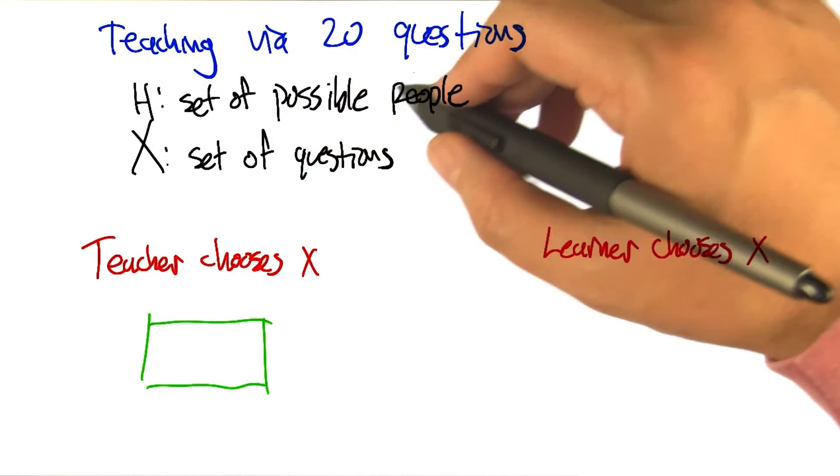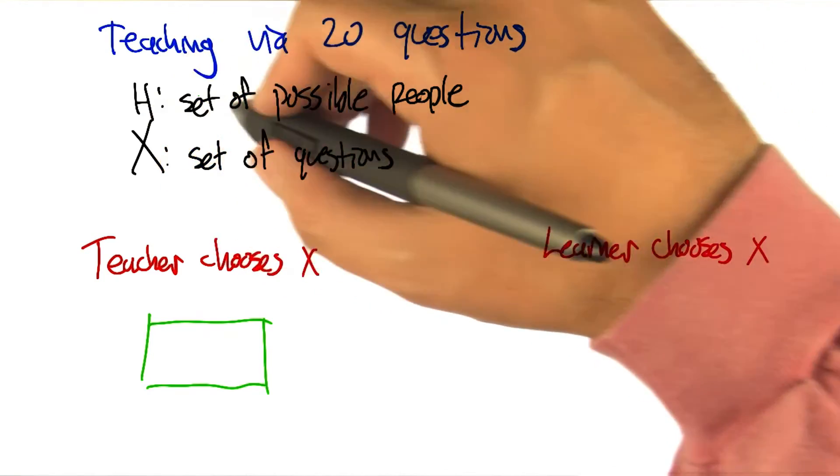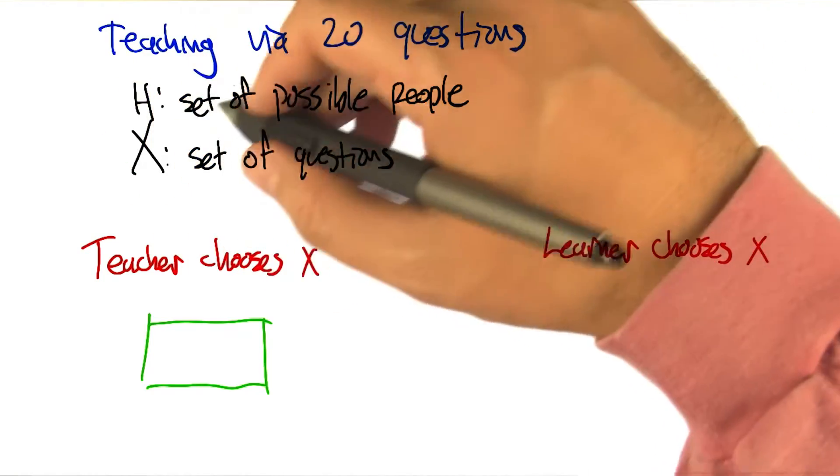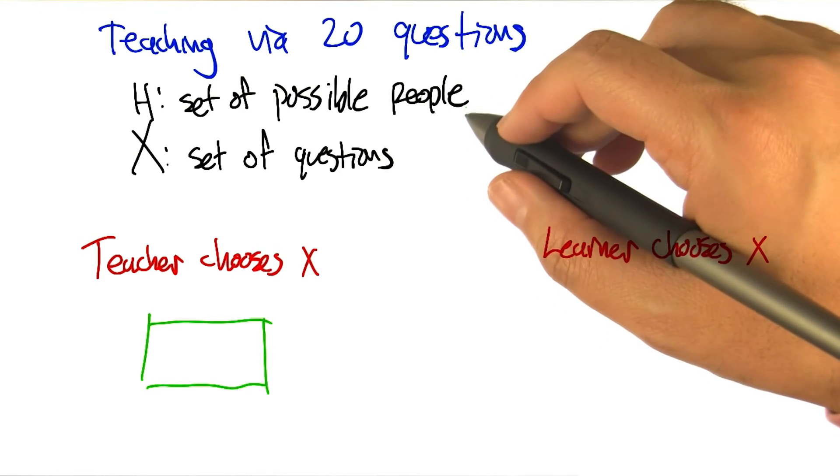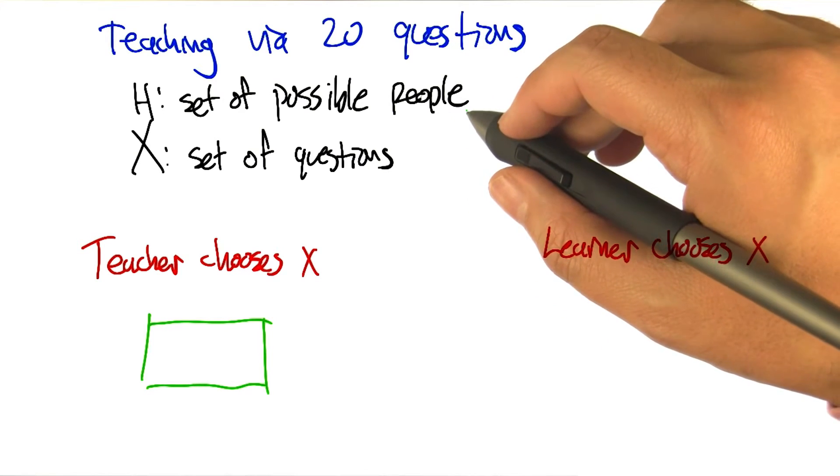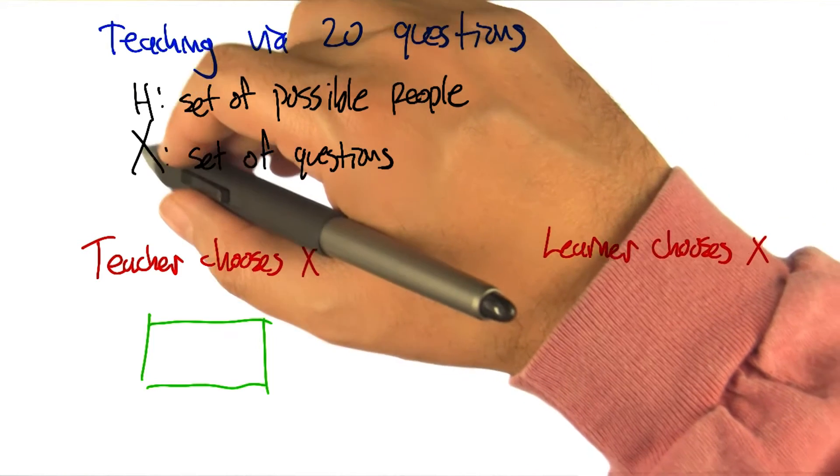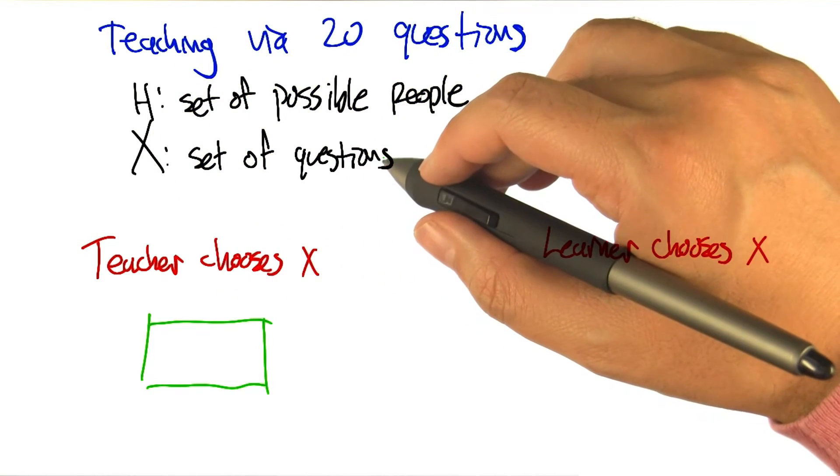And the hypotheses all map inputs to yes or no. Let's say that what we're trying to do in 20 questions is deal with our hypothesis class H, which is maybe a set of possible people. So these are the possible answers to the 20 questions problem, and X is the set of questions that you can actually ask.